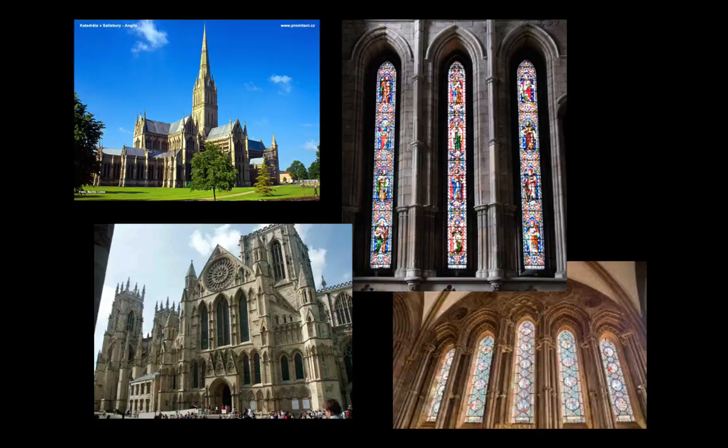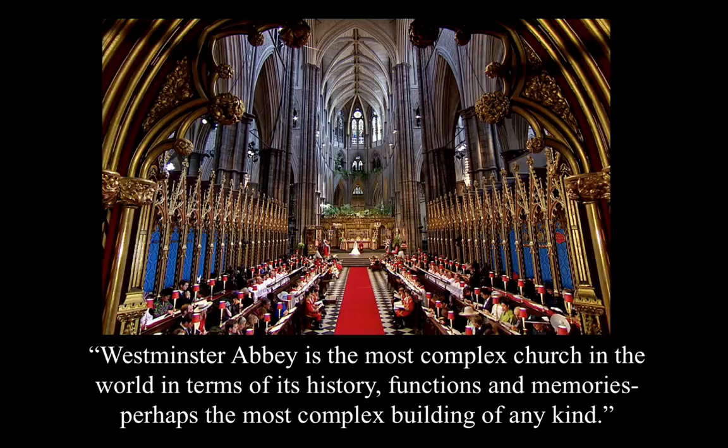The largest English Gothic cathedral is York Minster, shown at the bottom, and the tallest is Salisbury, but the most famous and most historically significant is the grand Westminster Abbey. Westminster Abbey is the most complex church in the world in terms of its history, functions, and memories — perhaps the most complex building of any kind.